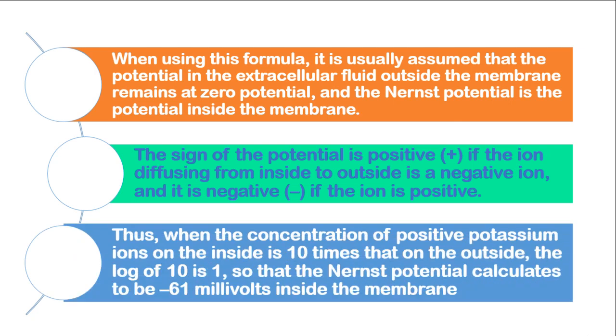Therefore, when the concentration of positive potassium ions on the inside is 10 times that on the outside, the log of 10 is 1, so that the Nernst potential calculates to be negative 61 millivolts inside the membrane.